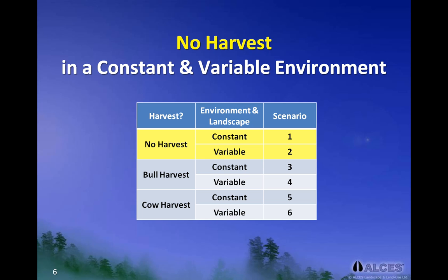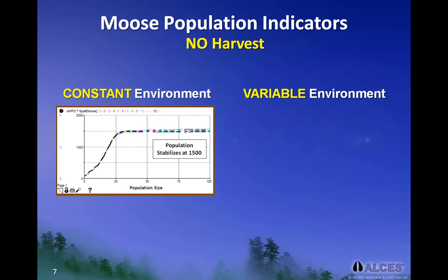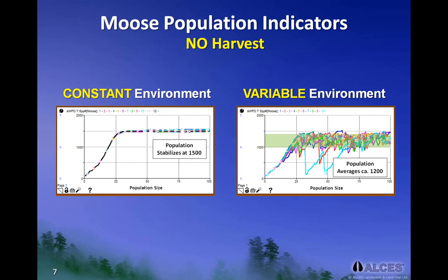For the two no-harvest scenarios, we will review graphs showing the basic population dynamics or trends over time, when the environment and landscape are constant, and when the environment and landscape are variable. This graph shows that the moose population grows to about 1,500 animals by around 30 years, and then moose numbers remain fairly constant for the rest of the simulation period. Because the environment was held constant and there is no harvesting, the trends for each of the 12 runs were virtually identical. The graph under a variable environment shows a similar growth rate of the moose population in the first 30 years, but the biggest difference is that the moose population mostly ranges between 1,000 and 1,400 individuals, and is on average approximately 1,200 animals over the simulation period. The green band shows the range of natural variability for the many times the model was run. You can see that even with no harvest in a variable environment, the numbers of animals may sometimes drop below the desired levels.